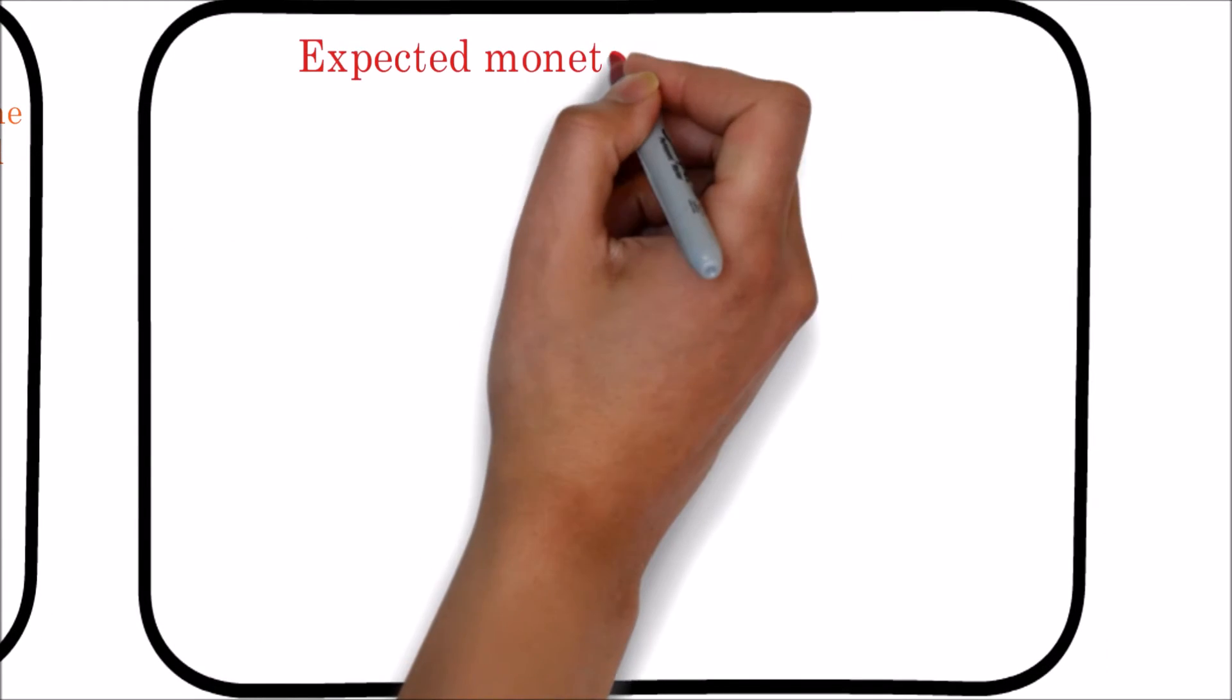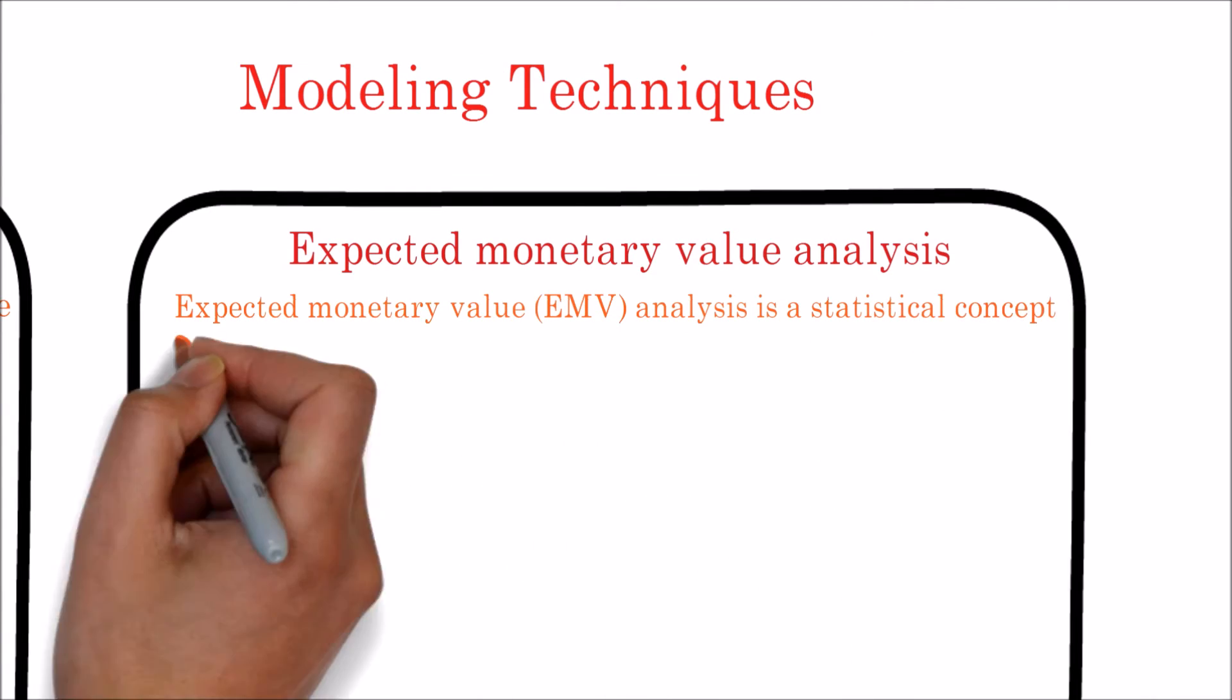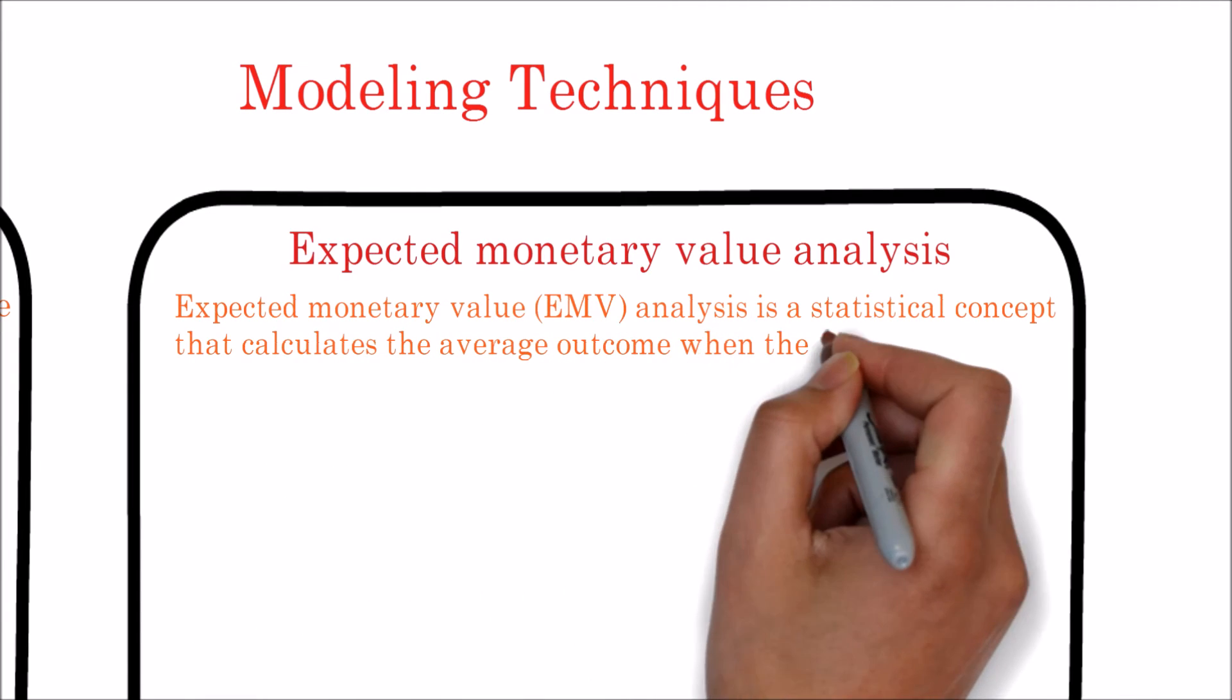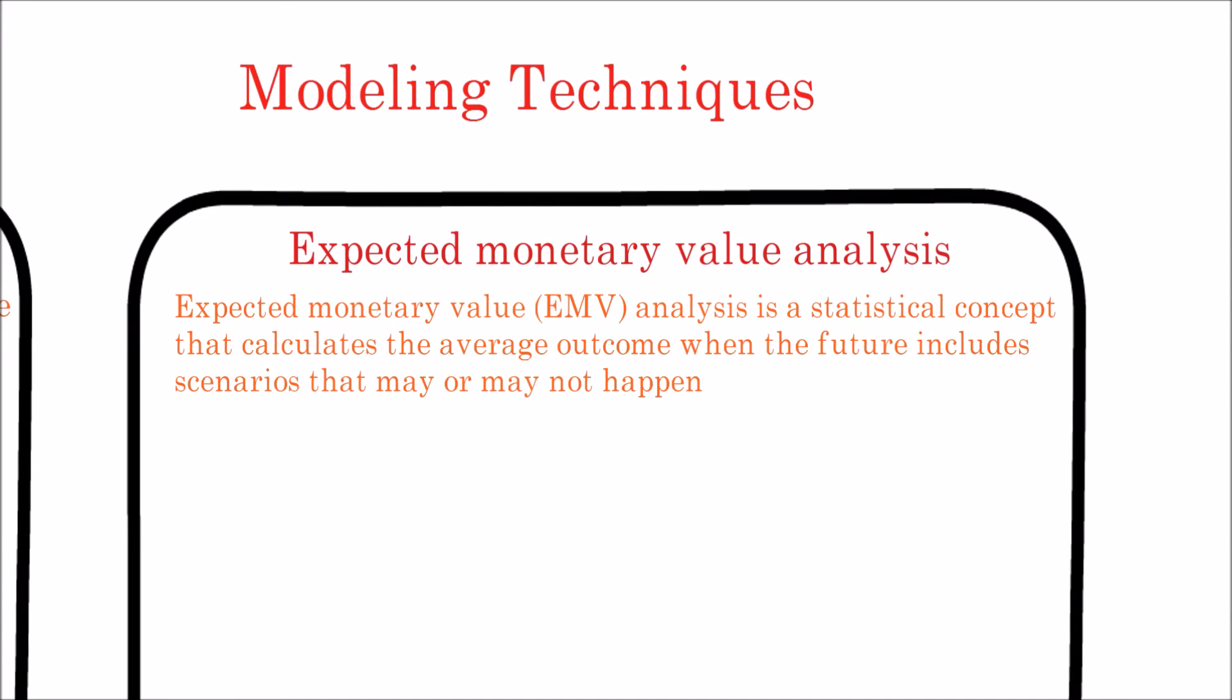Expected Monetary Value Analysis. Expected Monetary Value (EMV) Analysis is a statistical concept that calculates the average outcome when the future includes scenarios that may or may not happen, that is analysis under uncertainty. The EMV of opportunities are generally expressed as positive values, while those of threats are expressed as negative values. EMV requires a risk-neutral assumption, neither risk-averse nor risk-seeking. EMV for a project is calculated by multiplying the value of each possible outcome by its probability of occurrence and adding the products together.